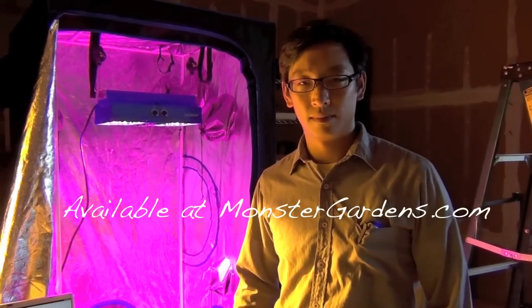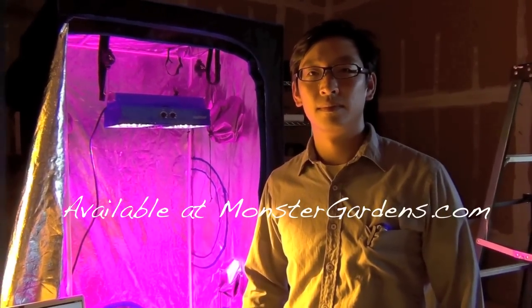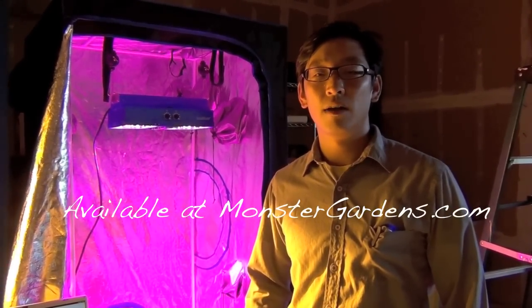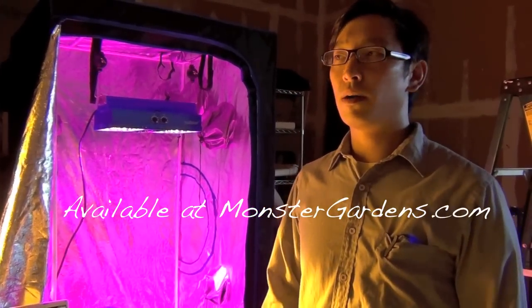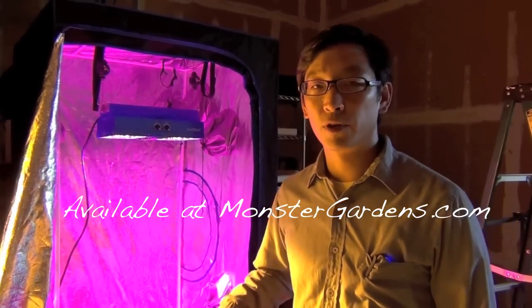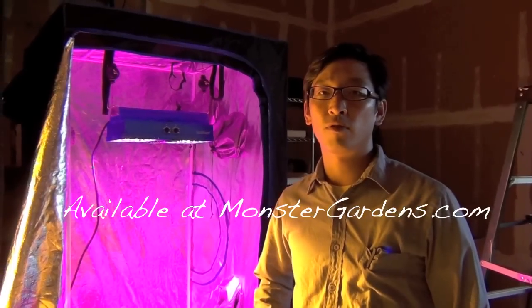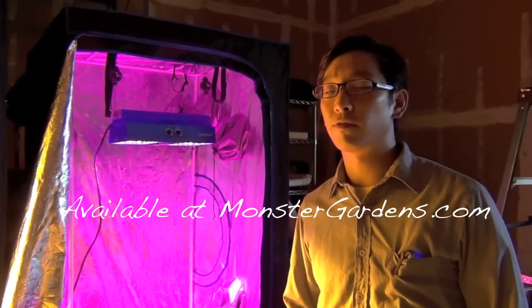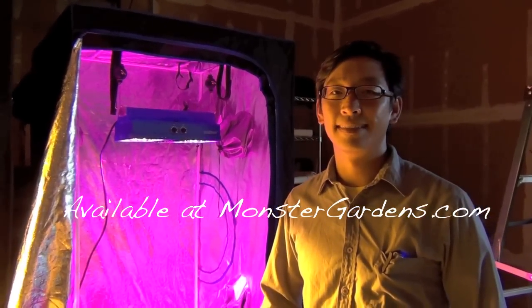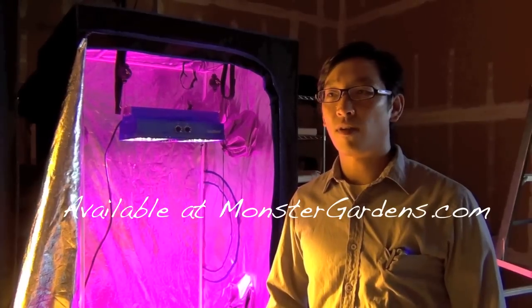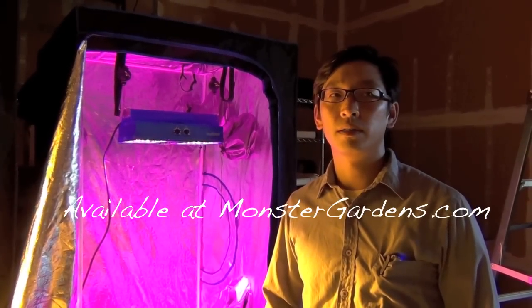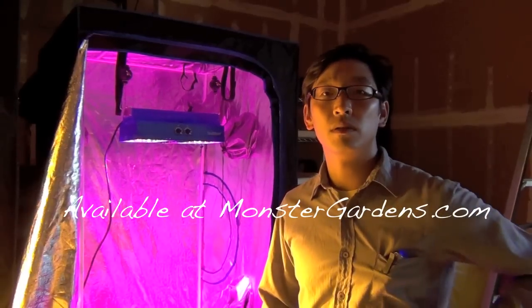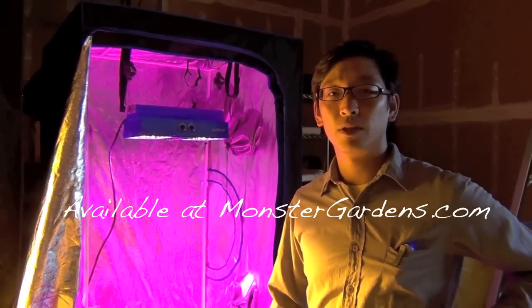We have the 165 unit and the 330. What kind of footprint are we looking at? For the 330, for a 3x3 area they're great. You can even light a 4x4, but we recommend a 3x3 coverage area for max plant production. The 165 is good for 2x2 or vegetative starts, really great for small starts.